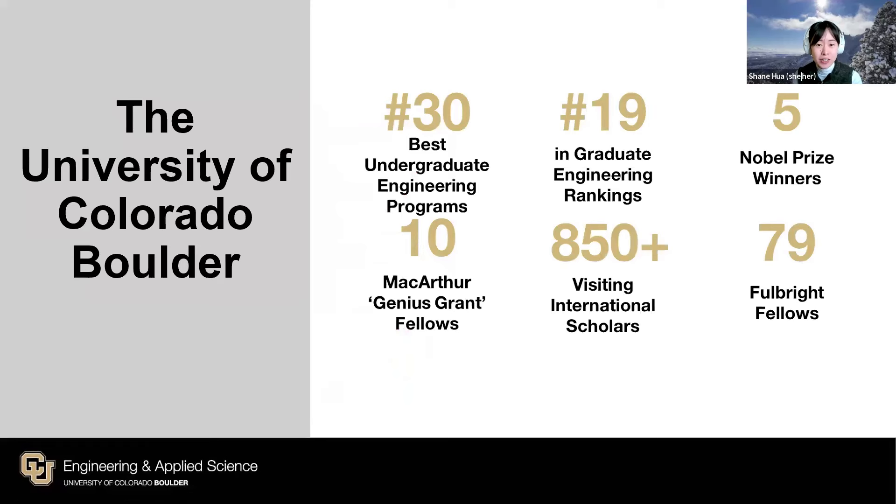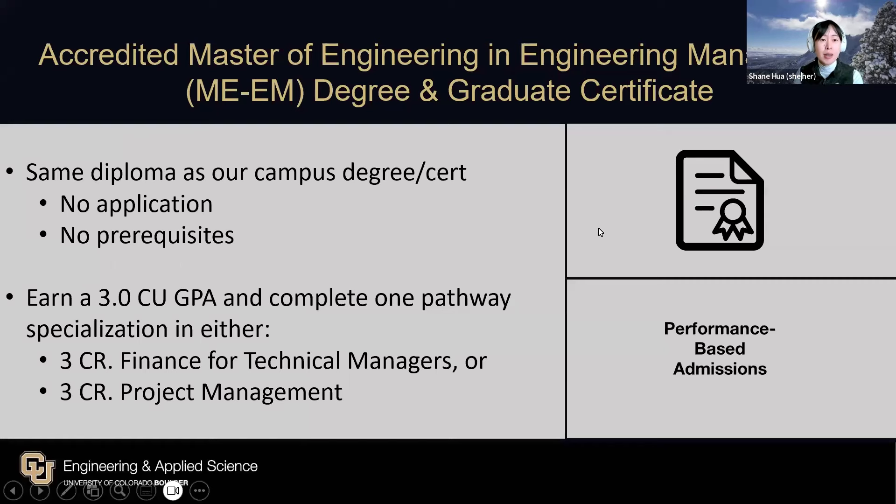Thank you so much, Ron. Here's a reminder to put any questions you have into the Q&A feature. So here's a couple facts about the University of Colorado Boulder. The University of Colorado Boulder is a world-class university with over 850 visiting international scholars. Founded in 1876, we're a Tier 1, Research 1 institution. Our Graduate Engineering College is ranked top 19 in the nation, and we have graduated five Nobel Prize laureates.